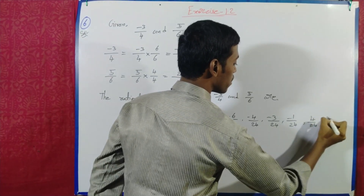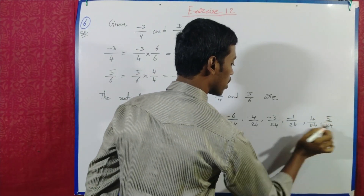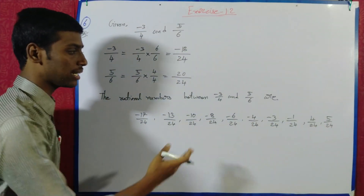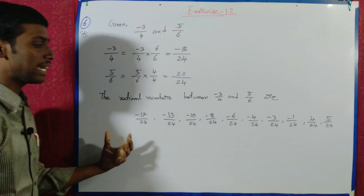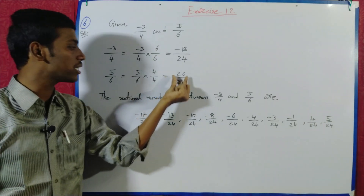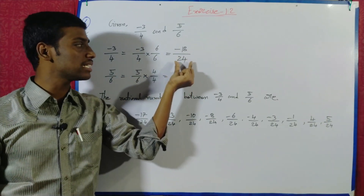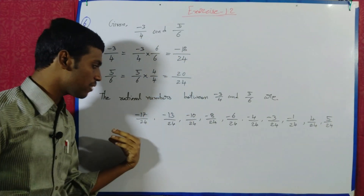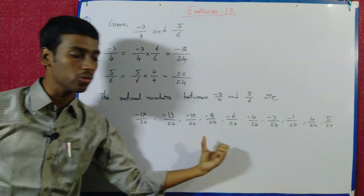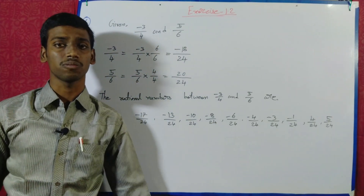That gives us ten rational numbers: one, two, three, four, five, six, seven, eight, nine, ten. These are the ten rational numbers between minus 3 by 4 and 5 by 6. Thank you.